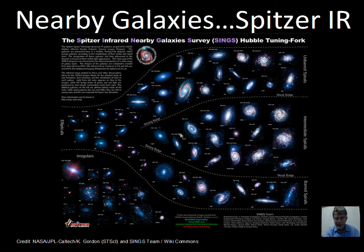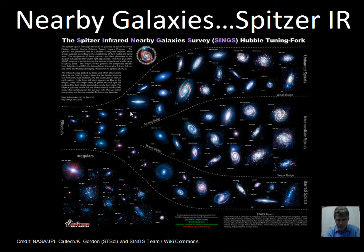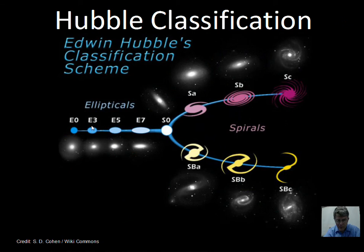There's been an enhancement to this tuning fork diagram with the Spitzer telescope infrared information, and you can see some examples of irregulars on this particular chart. One thing that has been debated is whether this is a path of how galaxies change. Most people think no — we don't start as an elliptical and then become a spiral galaxy, and these arms don't stretch out over time. But more on that later.